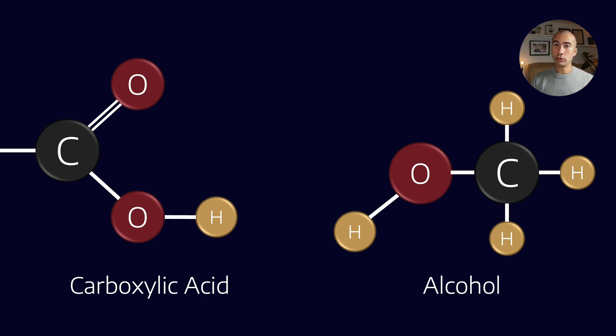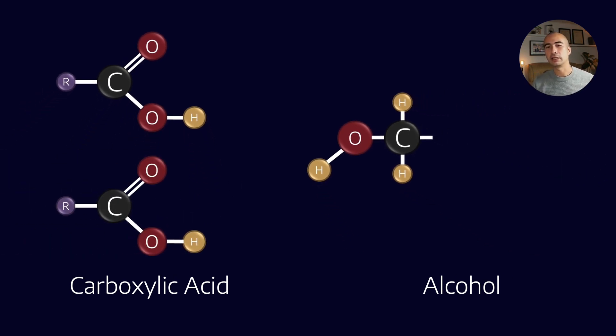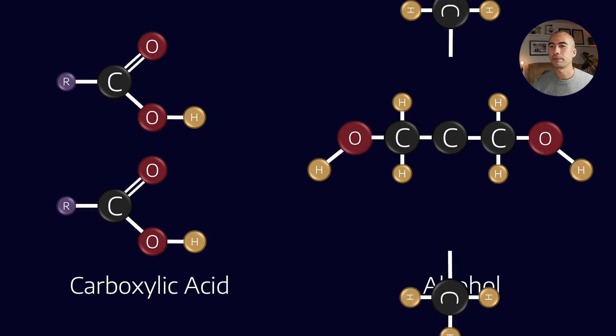In the traditional model, we have carboxylic acids and alcohols. We're going to take two monoacids—they just have a single acid functional group—and react that with an alcohol. In this case, we're showing two alcohol functional groups, one on either side with the OH group, and this particular molecule is called neopentyl glycol.